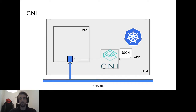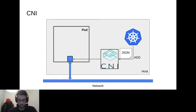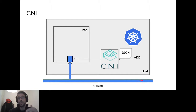CNI is invoked on two key events: when a pod gets created, CNI is invoked by the runtime to create and configure a network interface in the pod and connect it to the cluster-wide network. When a pod gets deleted, CNI removes the allocated resources — for example, if you use IPAM, it cleans up the IP address allocation from the pool.